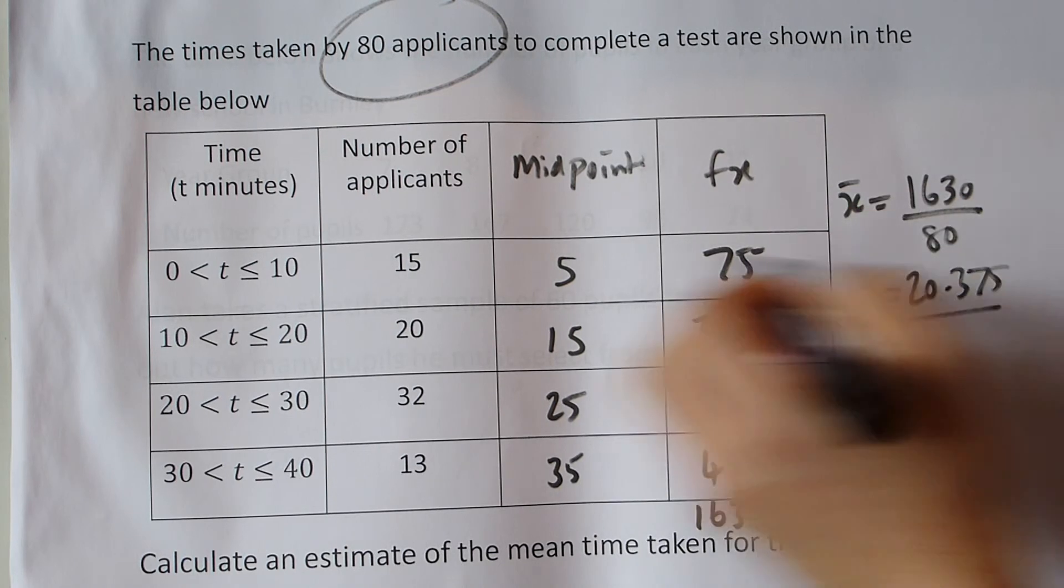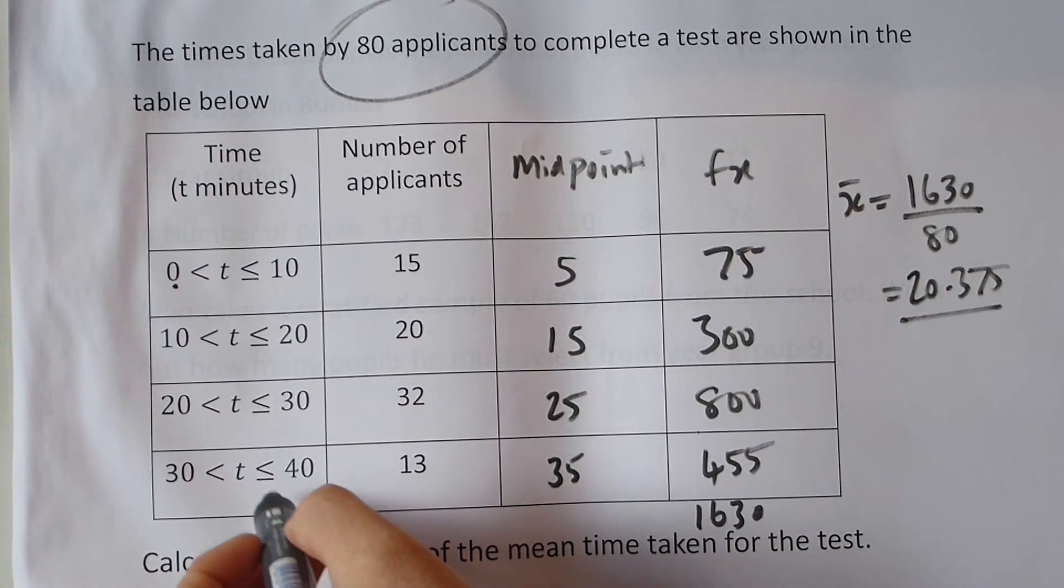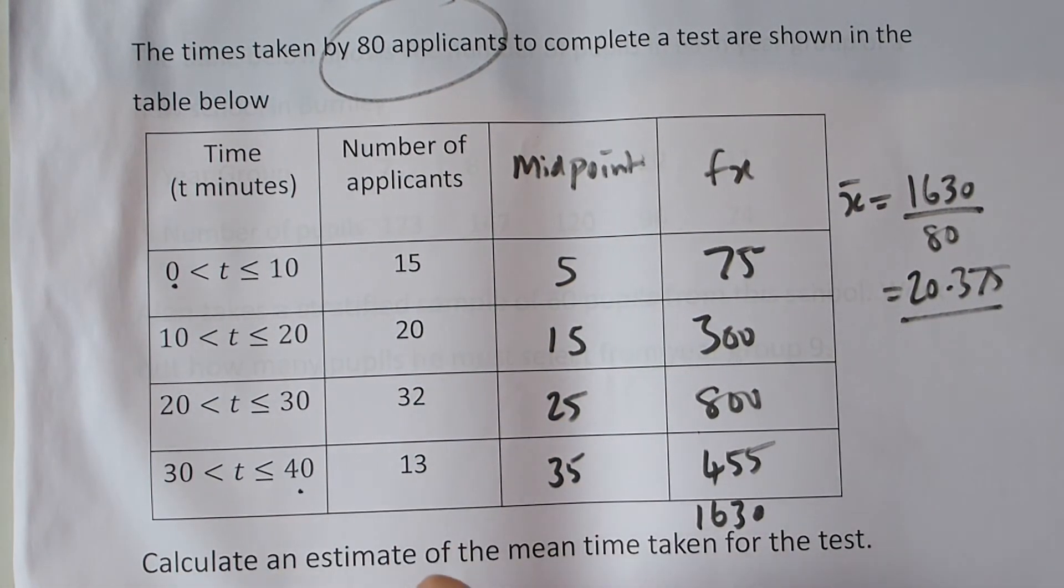The average, you know if you've gone wrong, should be between the smallest value and the largest value.